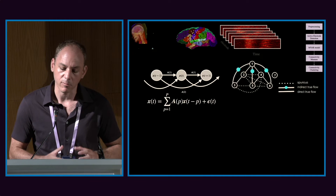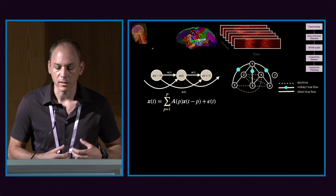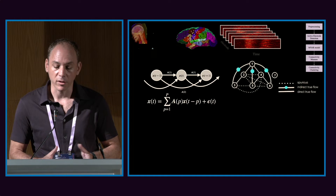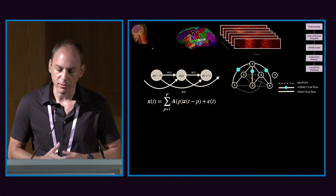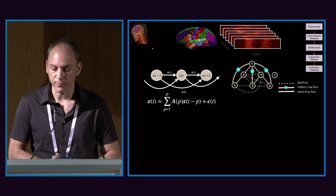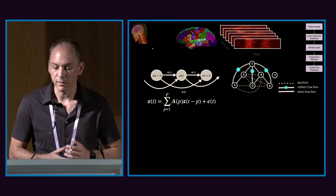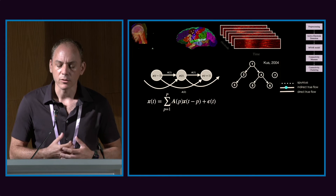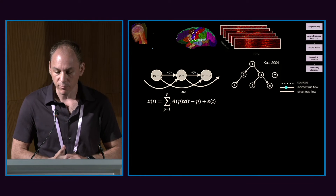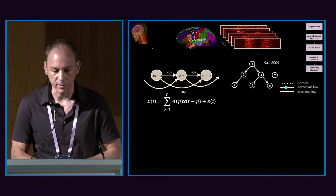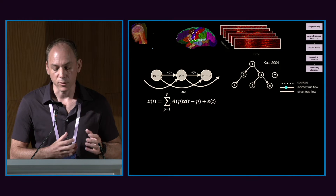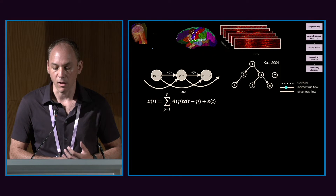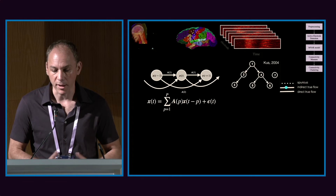When you look at coherence or directed coherence you have directionality, but if electrodes one, two, and three are correlated, you may think one and three are correlated even though that's a spurious connection. We partial those out using partial directed coherence, implemented using an autoregressive technique in the frequency domain, partialling out all information acquired from the electrodes.